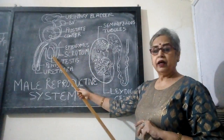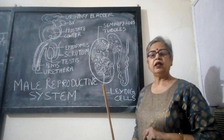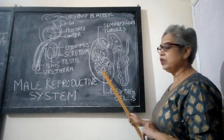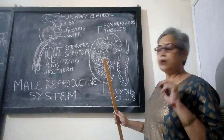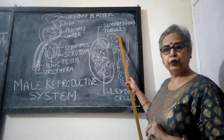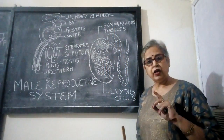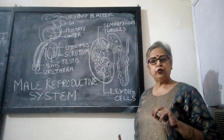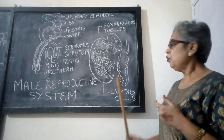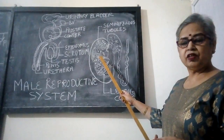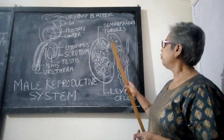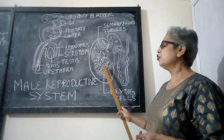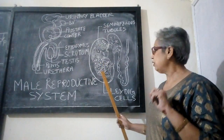Why are testes the primary sex organs? This is because in each testis there are a large number of seminiferous tubules, and the main function of gonads or sex organs is to produce gametes. The male gametes — sperms — are produced in these seminiferous tubules. Spermatogenesis takes place here, so the testes are the primary sex organs.